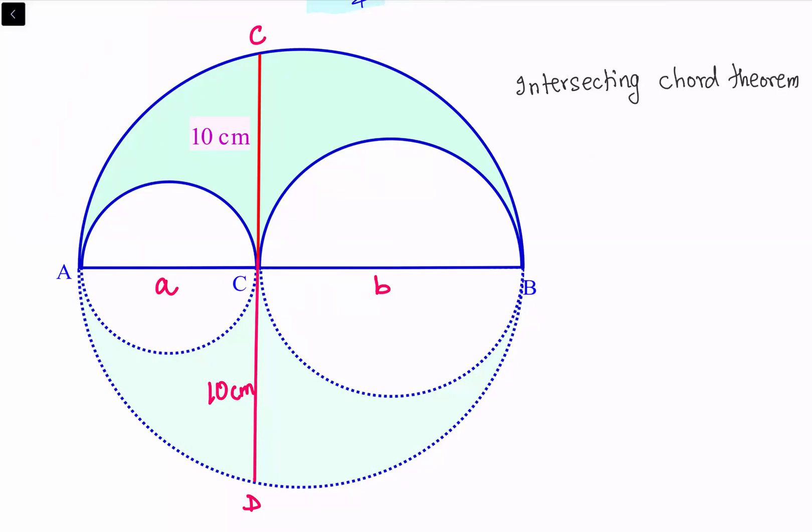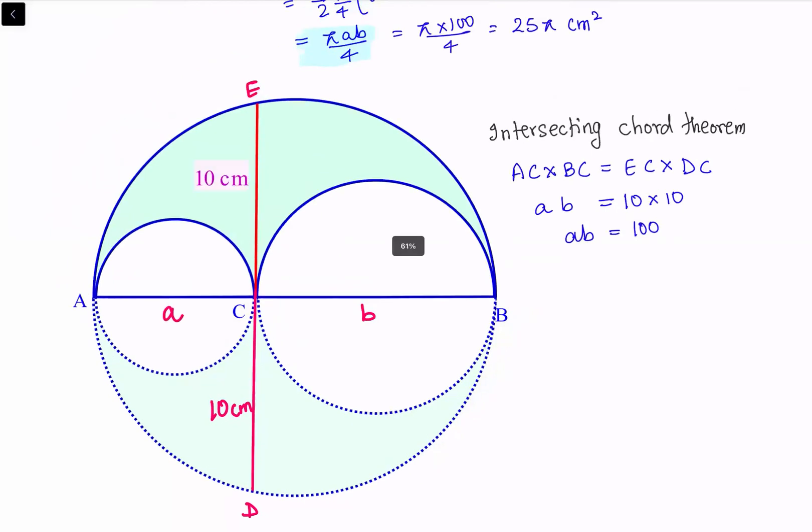If we apply the intersecting chord theorem, when two chords are intersecting each other, the product of corresponding lengths are equal. Let's assume this point as E. So AC times BC equals EC times DC. AC is A, BC is B, EC is 10, and DC is 10. So A times B equals 100.